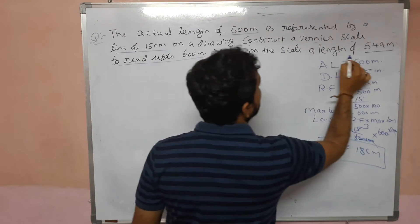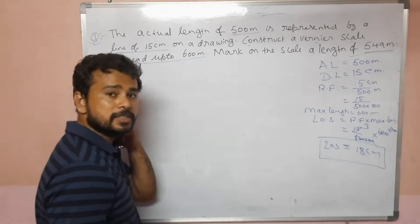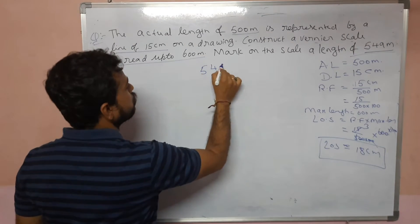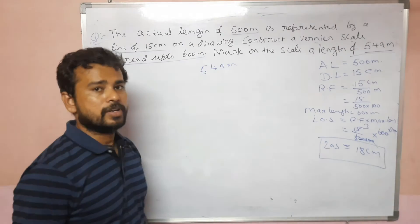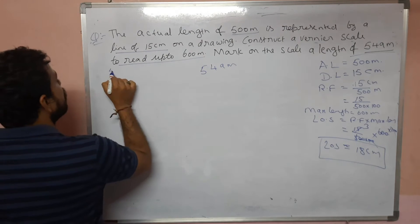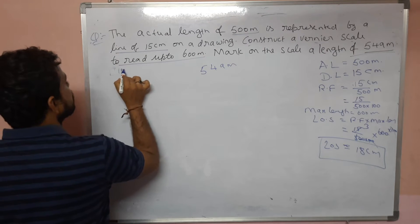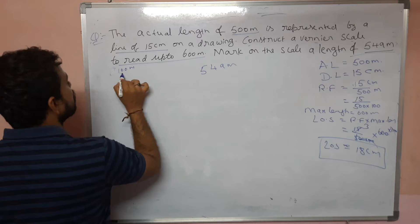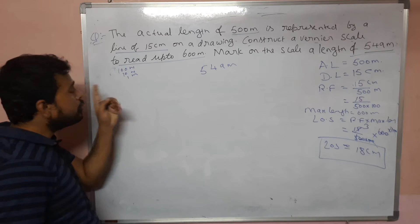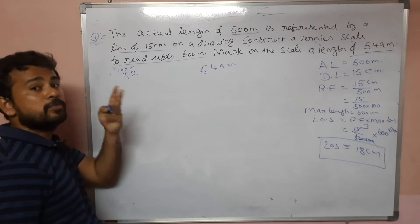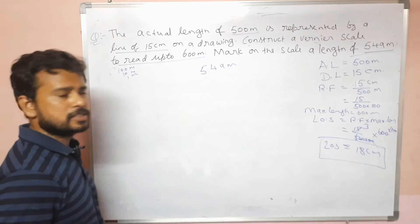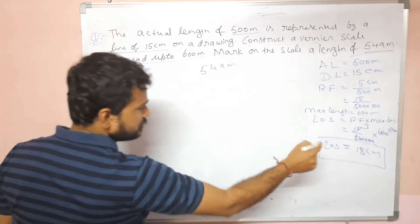Mark on the scale a length of 549 meters. So 549 meters has three dimensions: 100 meters, 10 meters, and 1 meter. Our line has 3 dimensions and their 3 dimension values: 1 meter, and second zero.